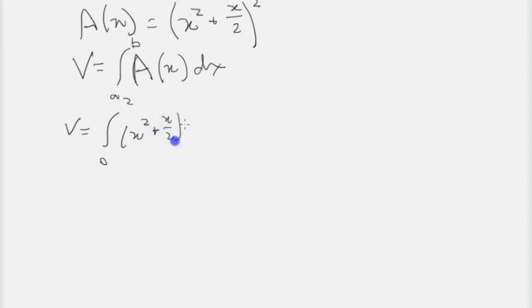And now let's expand out that quantity squared inside, and we'll get x to the 4th plus 2 times x to the 3 over 2 plus x squared over 4. And now that's just a polynomial, and we can integrate that between 0 and 2.